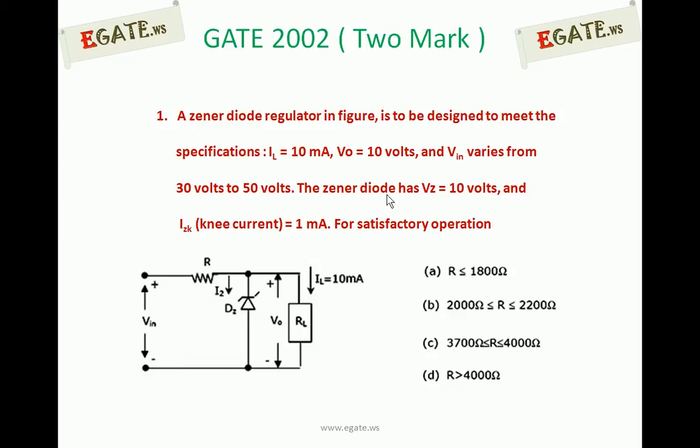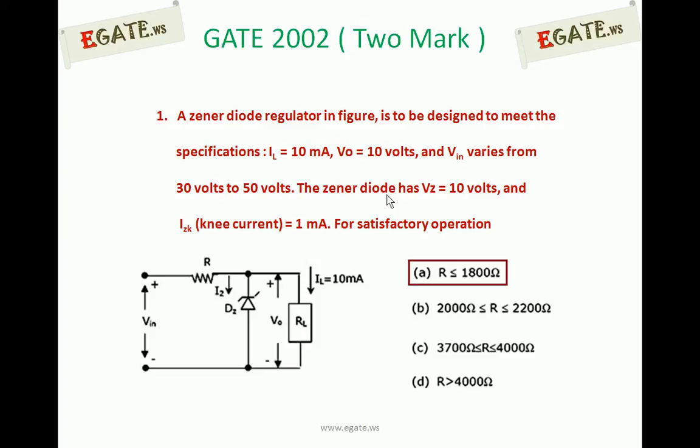The right option for this question is A. So the series resistance R should be less than or equal to 1800Ω.